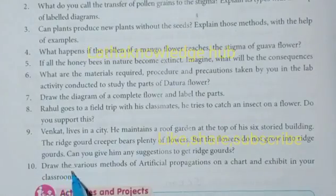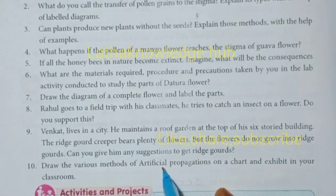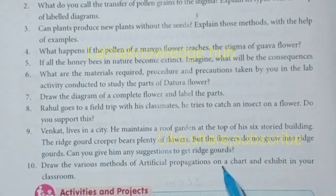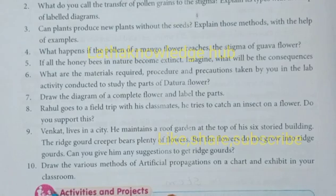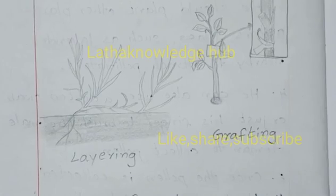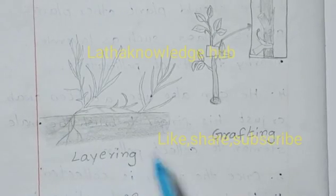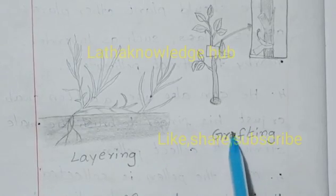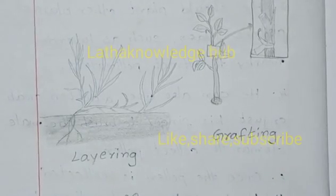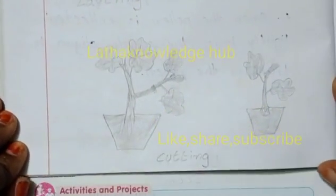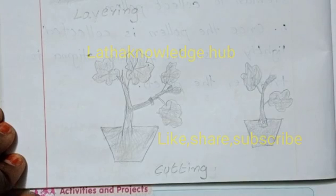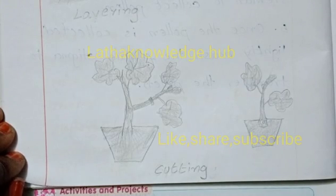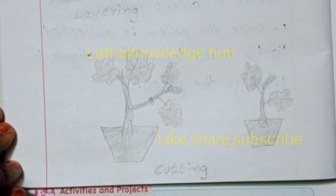Question: Draw the various methods of artificial propagation on a chart and exhibit in your classroom. The three artificial methods of propagation in plants are: layering, grafting, and cutting.